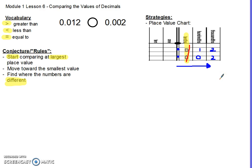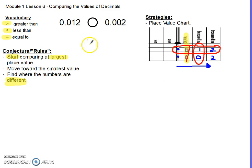Those are the same, so I know I'm not going to compare those. Then I move to the next largest place value, which gives me 1 and 0, and I found where they're different. I'm going to circle these two to mark where they're different, then ask myself which one is larger. I have a 0 and a 1 — the 1 is larger, so 0.012 is my larger number.